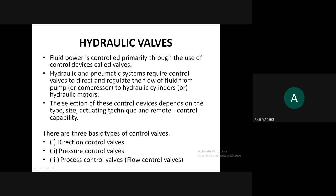There are three basic types of control valves. The first is directional control valves, the second is pressure control valves, and the third is flow control valves, also called process control valves. Directional control valves control the direction of fluid — either liquid or compressed air. In a pneumatic circuit it controls air direction; in a hydraulic circuit it controls the direction of fluid flow.